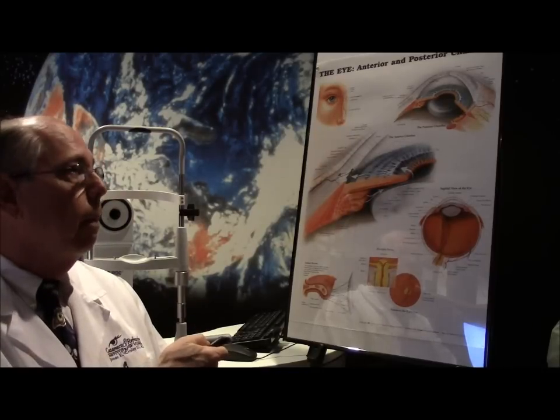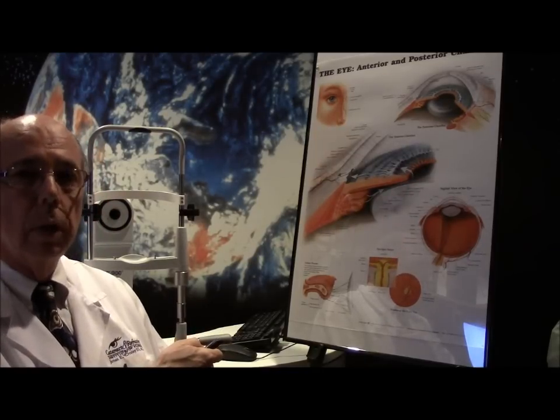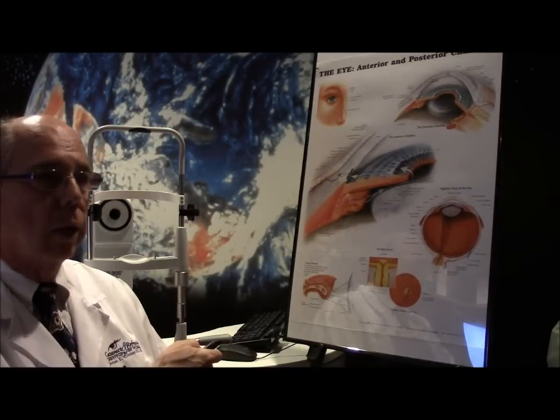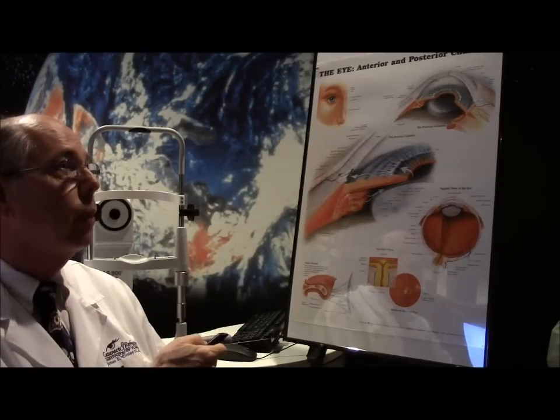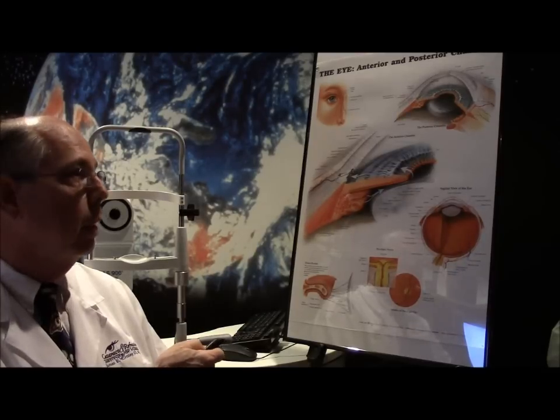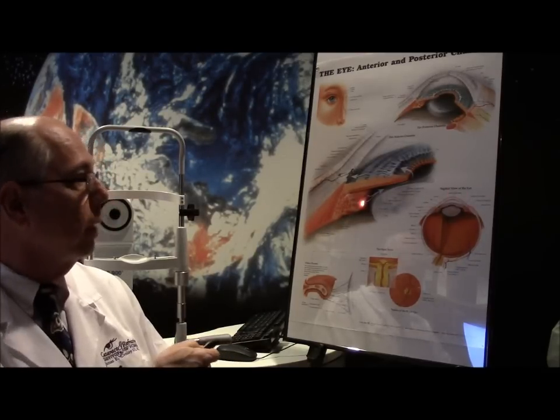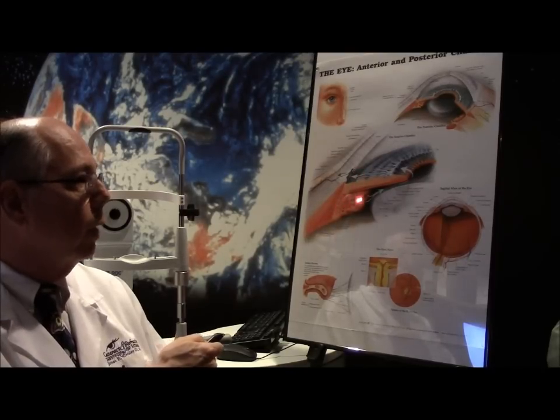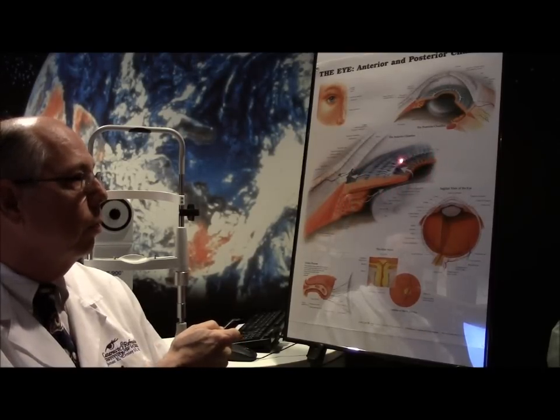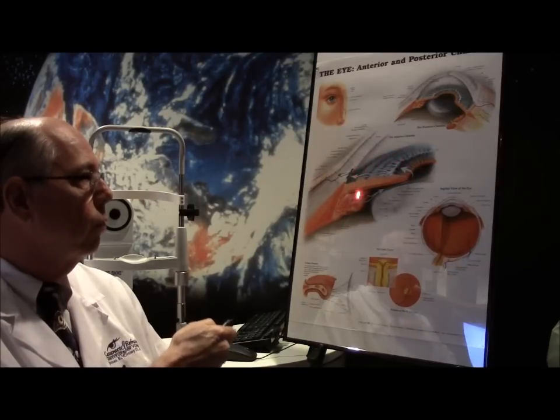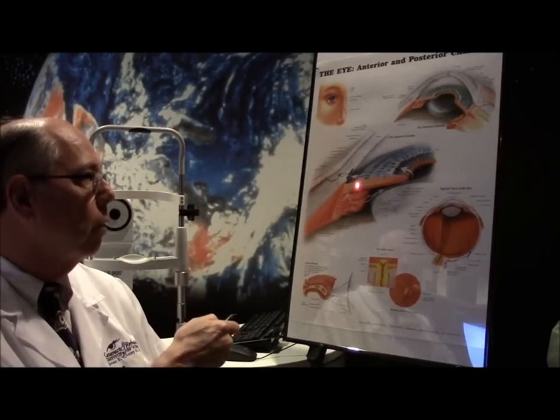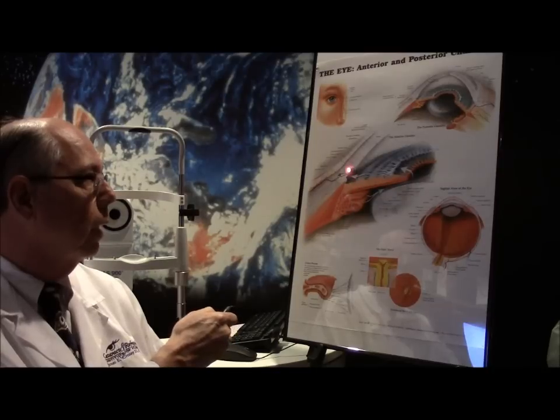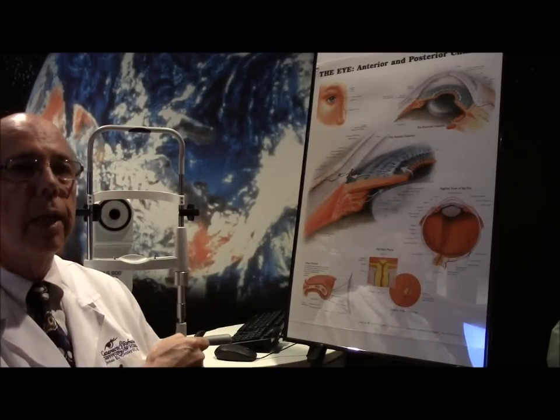So then what do we do about someone who has narrow angles or angle glaucoma? So if you actually have the attack and the pressure 70 on an emergency basis, we have to come in and laser a little opening in your iris. So instead of the fluid now having to travel up through the pupil and over, some of the fluid goes directly from behind the iris through the little opening in your iris directly in the meshwork. So that's like a safety valve.